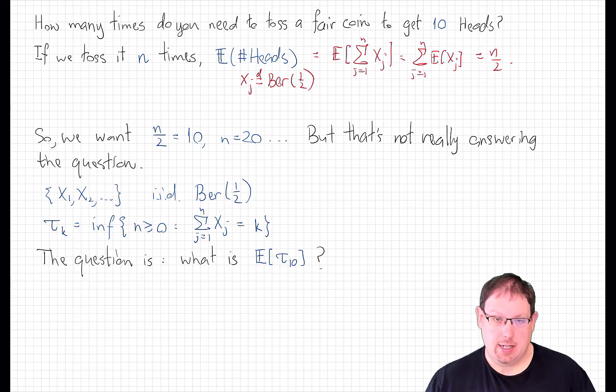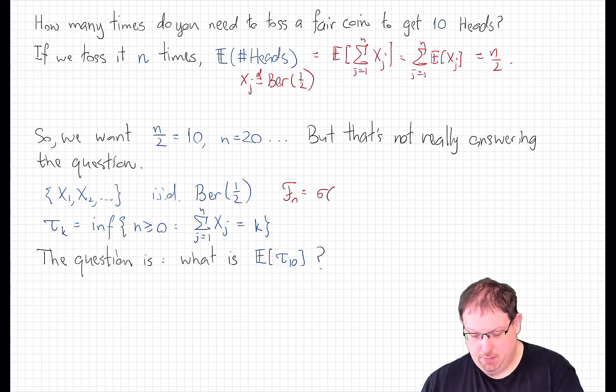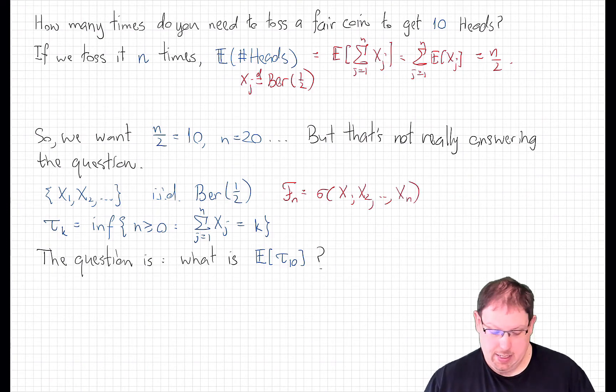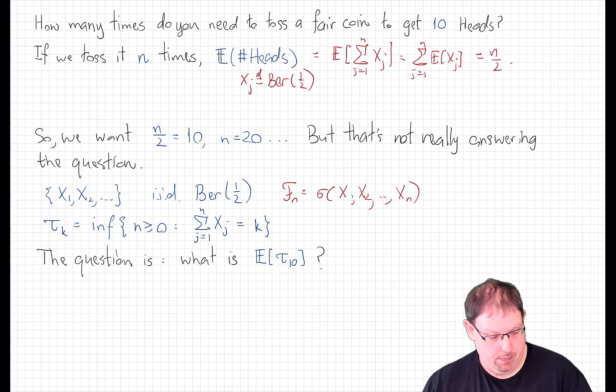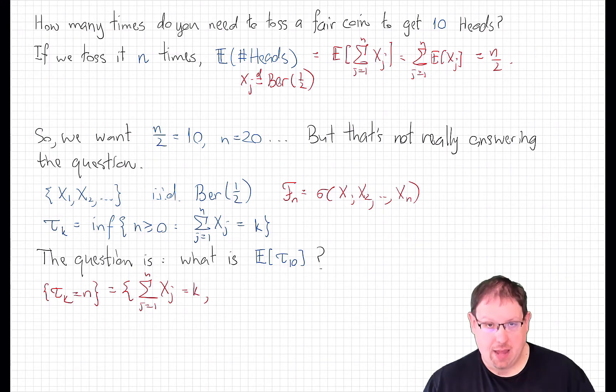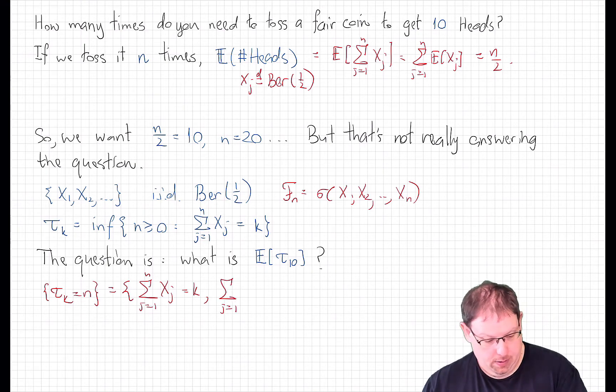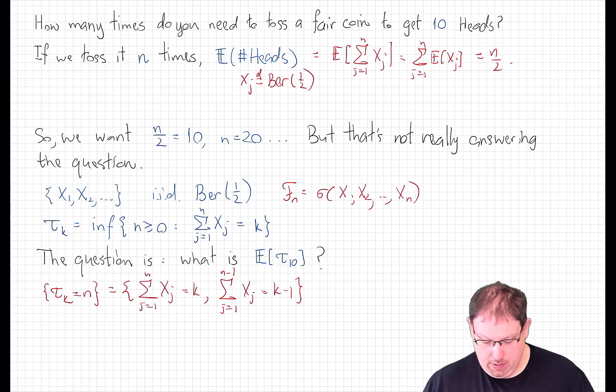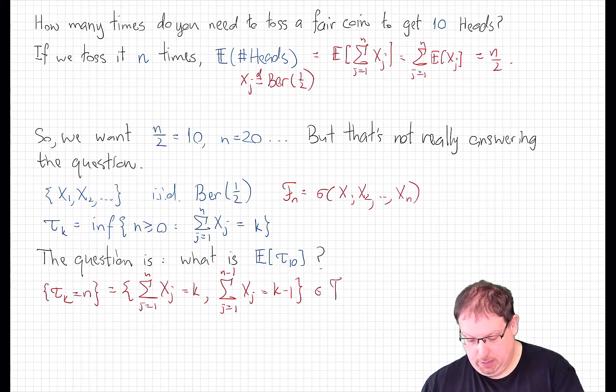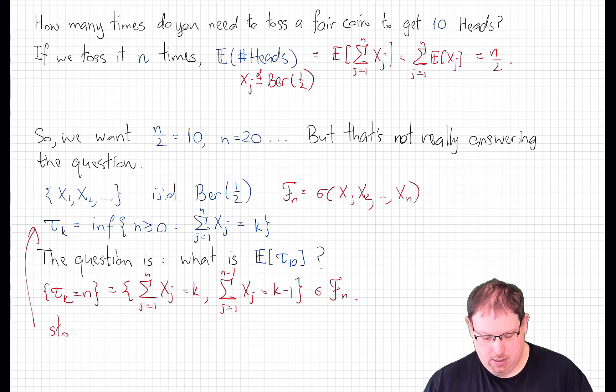Fortunately, this is a nice kind of time. If we let Fn be the sigma field generated by the random variables x1, x2, up to xn, then we can easily see that this is a stopping time. Indeed, the event that tau k equals n is the event that the sum of the first n x's equals k and that no smaller sum equals k. Since these are all non-negative terms, that's the same as saying that the sum j going from 1 up to n minus 1 of xj equals k minus 1. This event is determined by the values of x1 through xn, so it's in the sigma field Fn. So tau k is a stopping time, at least.